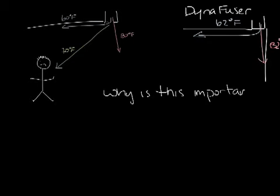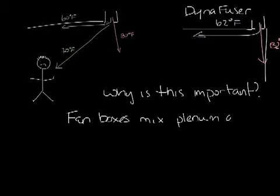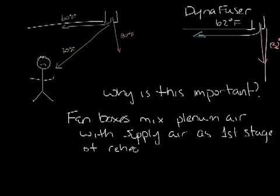If you have your slot diffuser connected to a fan powered thermal unit and if you recall from the fan box podcast the first stage of heating for a fan box is mixing plenum air with the primary air. So you could have supply air temperatures in the mid 70s quite often with a fan box. If the diffuser wasn't a two position device it could spend a lot of time in that middle range directing the air at a 45 degree angle into the space and towards the occupant.